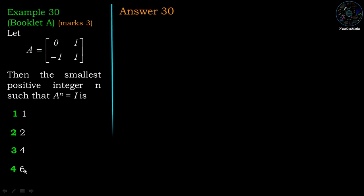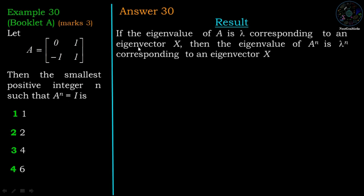Now, to solve this example we will use one important result of eigenvalue. If the eigenvalue of A is lambda corresponding to an eigenvector X, then the eigenvalue of A power n is lambda power n corresponding to an eigenvector X. That means if the eigenvalue of A is lambda, then eigenvalue of A power n is lambda power n.